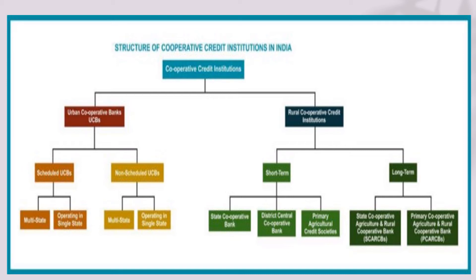Coming to the rural cooperative credit institution, here we have both long-term and short-term. In the case of short-term, starting with the hierarchy: state cooperative banks, under that district central cooperative banks, and under district central cooperative banks we have primary agriculture credit societies. In the case of long-term, we have state cooperative agriculture and rural development banks and primary cooperative agriculture and rural development banks.